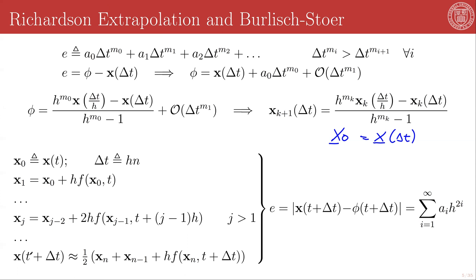The final approximation of x at t + Δt will be equal to 1/2 of (x_n + x_{n-1} + h·f(x_n, t+Δt)).